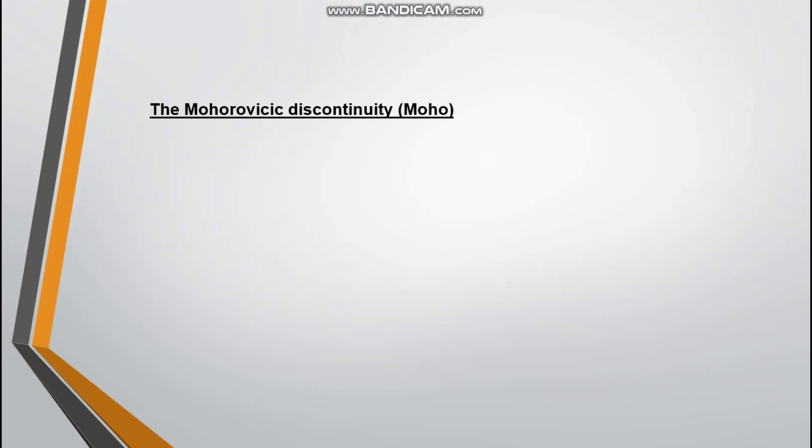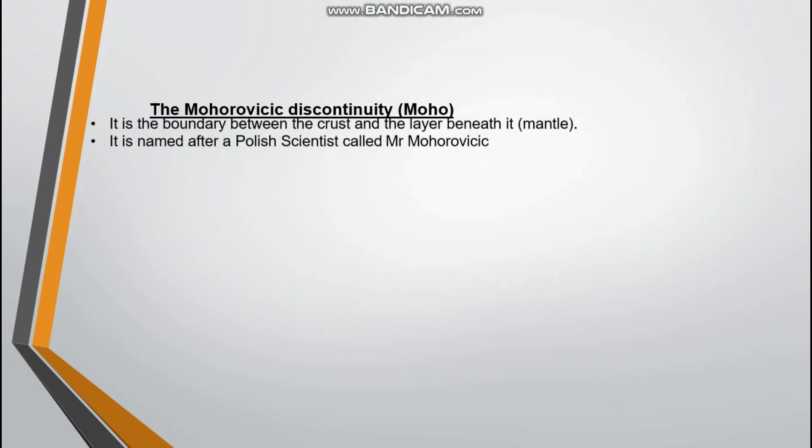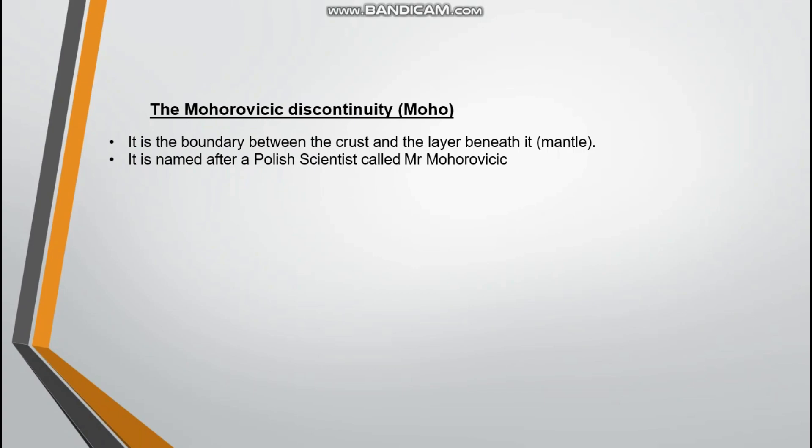Before we go to the mantle, there is something called the Mohorovičić Discontinuity, or simply the Moho. It is the boundary between the crust and the layer beneath it, which is the mantle. It's named after a Polish scientist called Mr. Mohorovičić. In the exam, they might ask you: what is the name of the boundary between the crust and the mantle? The answer is the Mohorovičić Discontinuity.